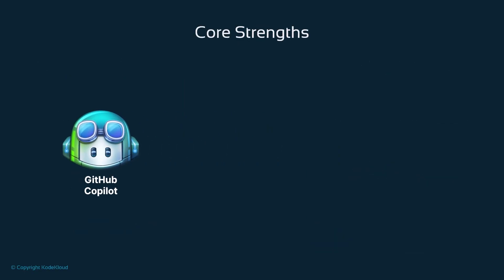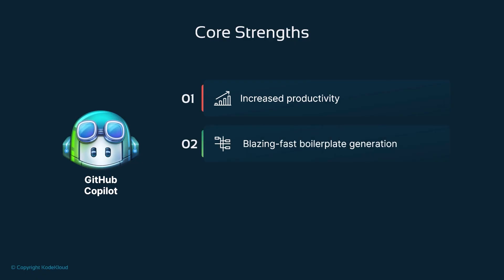Let's break down Copilot's fundamental strengths. First, it dramatically increases productivity through real-time suggestions. The boilerplate generation is particularly impressive — Copilot can write repetitive code patterns instantly. Most importantly, it shows remarkable context understanding, analyzing your existing code to provide relevant suggestions.